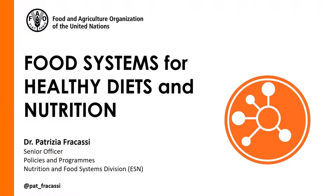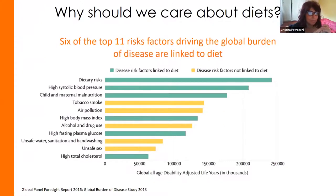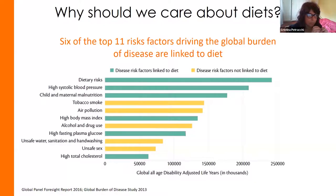Good afternoon to everyone. I'm very happy to be part of this webinar. I'm going to talk about food systems for healthy diets and nutrition. Six of the top 11 risk factors driving the global burden of disease are linked to diet. Unhealthy diets are now responsible for more adult death and disability than tobacco, air pollution, alcohol, and unsafe sex. Evidence shows that individuals with underlying diet-related non-communicable diseases have a higher risk of severity and mortality from infectious diseases, and early reports suggest this is also true of COVID-19 exposure.